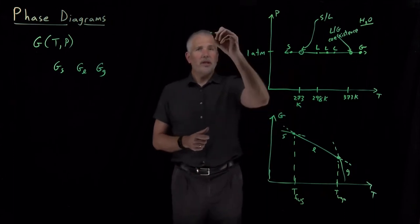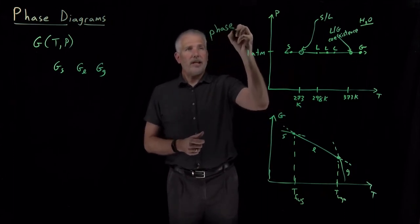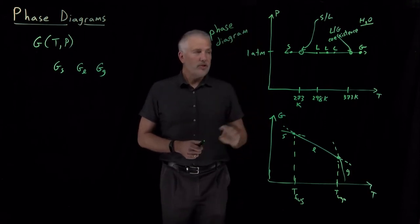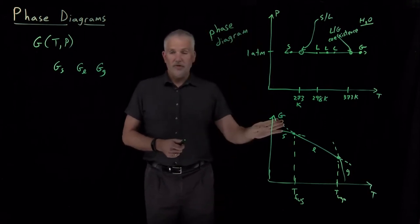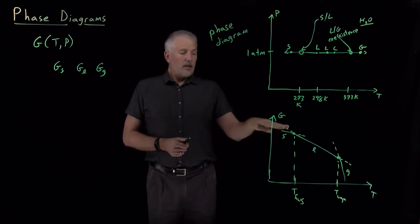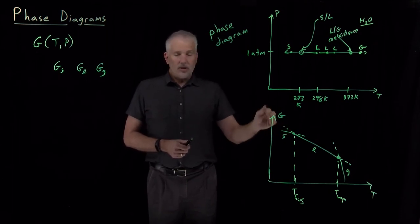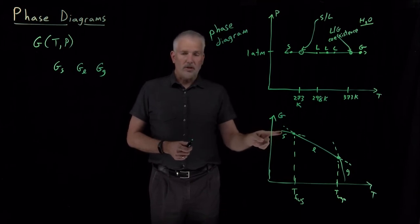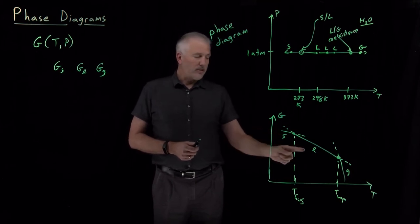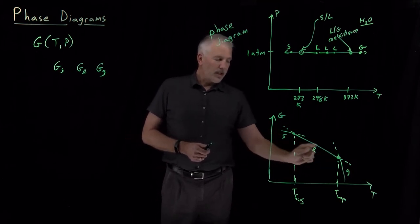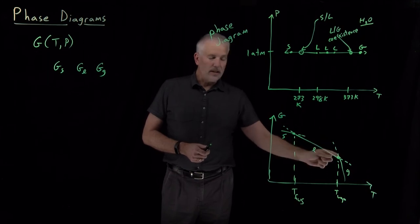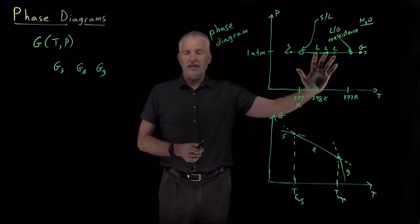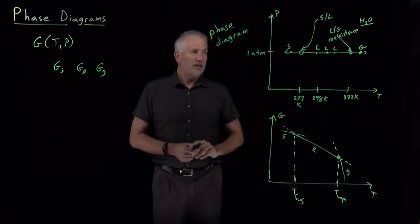The diagram we're building is called a phase diagram. On this diagram, we're no longer interested in the actual value of G — whether it's large or small. All I care about is which phase has lower free energy than the others. In this range of temperatures, the liquid is lower in free energy than the solid and the gas, so I label those points as liquid. All I care about is which phase is lowest in free energy.